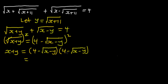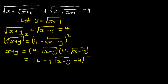Expanding the right-hand side: 4 times 4 gives 16, then 4 times minus square root of X minus Y gives minus 4 times the square root of X minus Y, and minus square root of X minus Y times 4 gives another minus 4 times the square root of X minus Y, and finally we get positive X minus Y. So the right-hand side equals X plus Y.